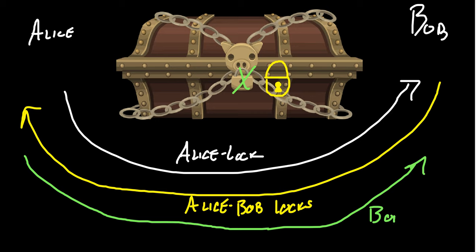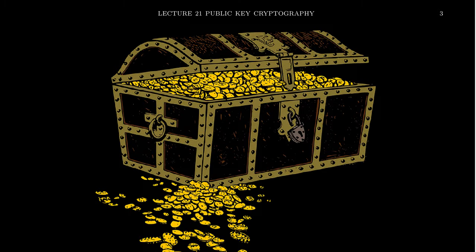But this time when the treasure chest returns to Bob, the only lock on the treasure chest was the lock that Bob originally put on the treasure chest. And so Bob, who has the key to unlock the treasure chest, is then able to unlock it. And voila, the treasure chest is open again. What I've now explained to you via this fairy tale is what's commonly referred to in the cryptography literature as the Diffie-Hellman key exchange.